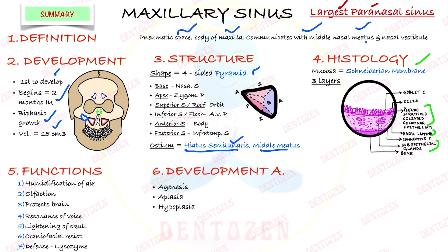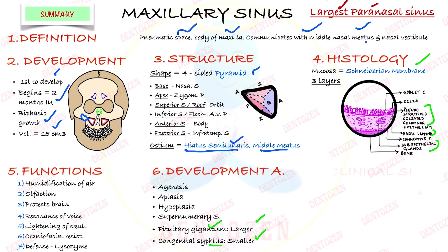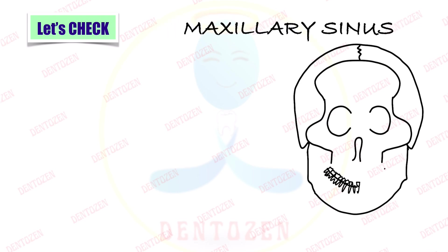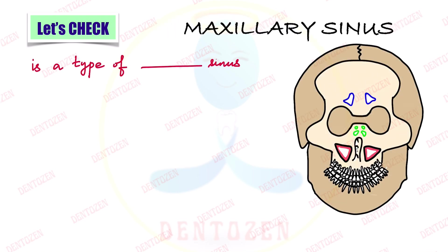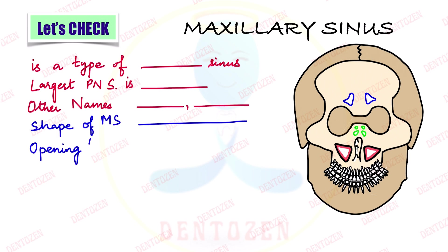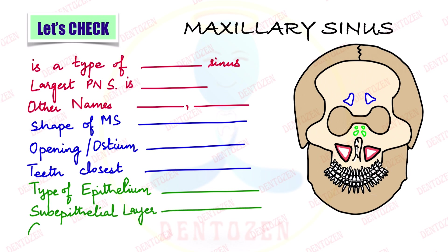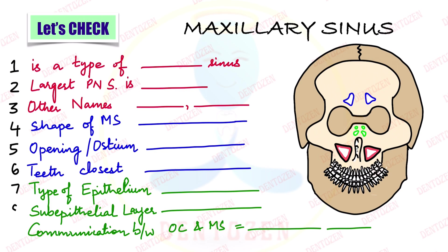Developmental anomalies: agenesis, aplasia, hypoplasia, supernumerary sinus, larger sinus in gigantism, and smaller in congenital syphilis. Clinical significance: transfer of infections, oroantral fistula, perforation of the sinus floor in hypercementosis, and malignancy. Review questions: What type of sinus is the maxillary sinus? Which is the largest paranasal sinus? What are the two other names for maxillary sinus? What is its shape? Where is its opening? Which teeth are closest to the sinus? What type of epithelium lines it? What does the sub-epithelial layer contain? And what is the communication between the oral cavity and the maxillary sinus called?